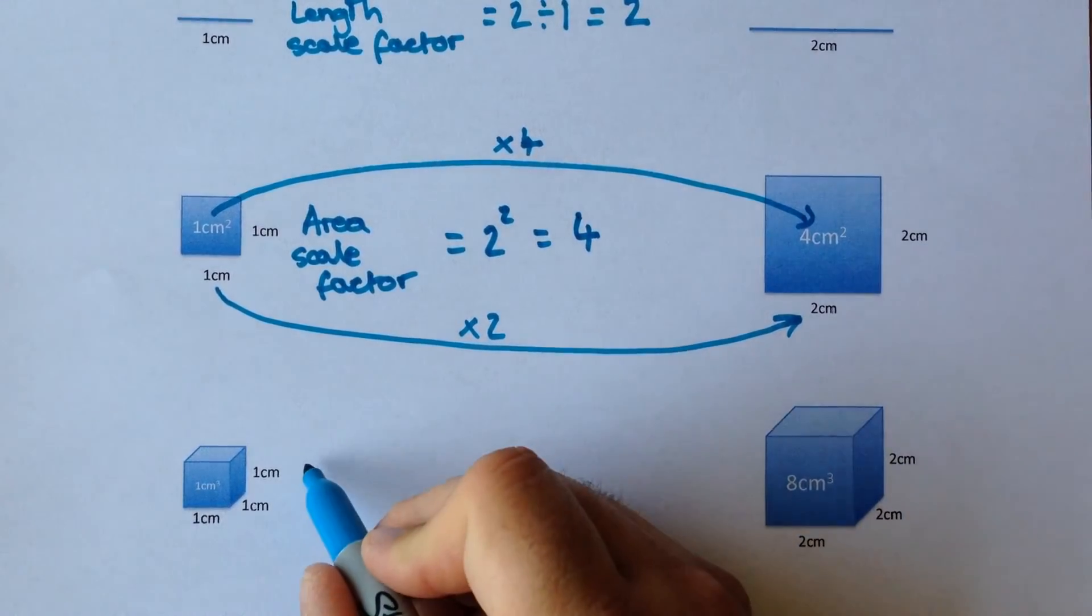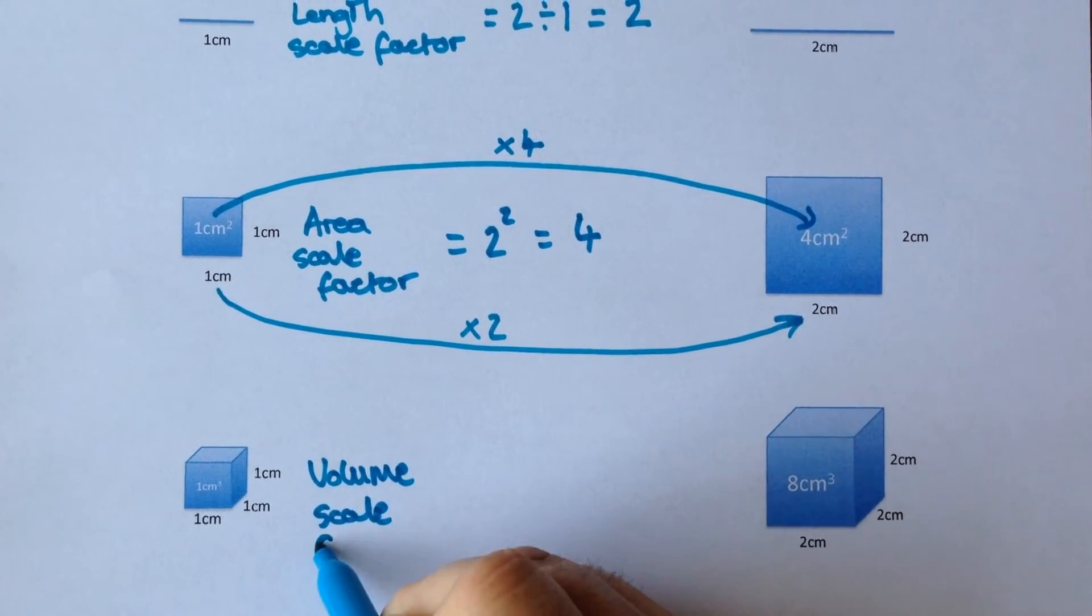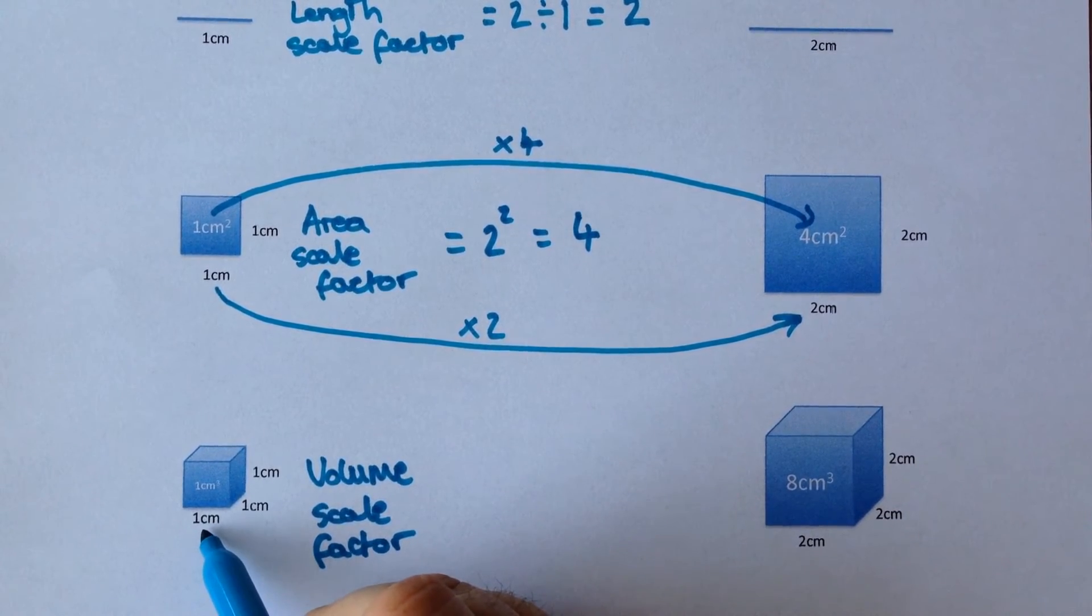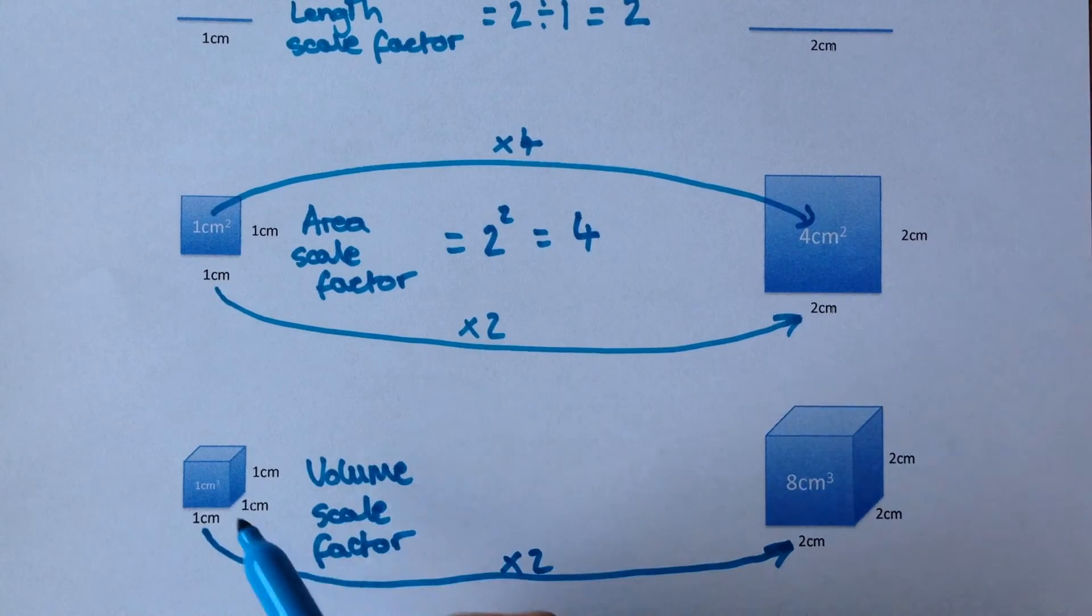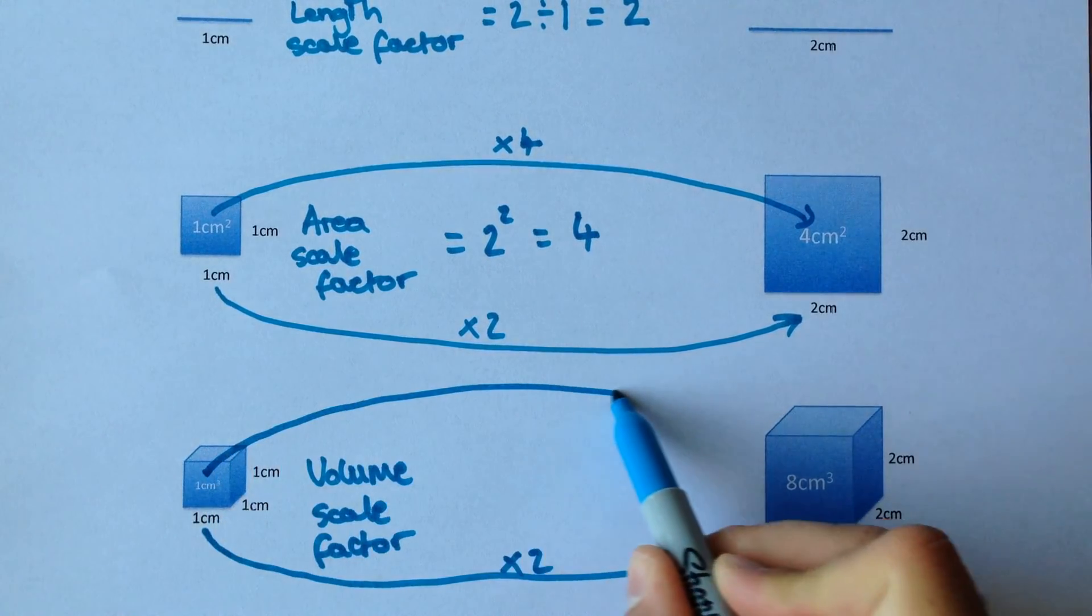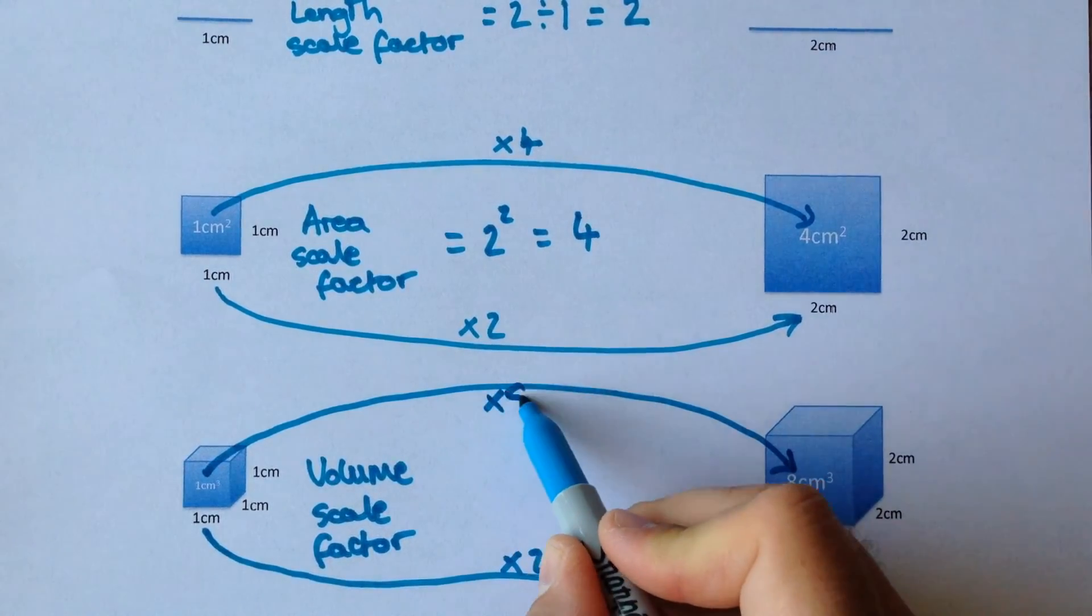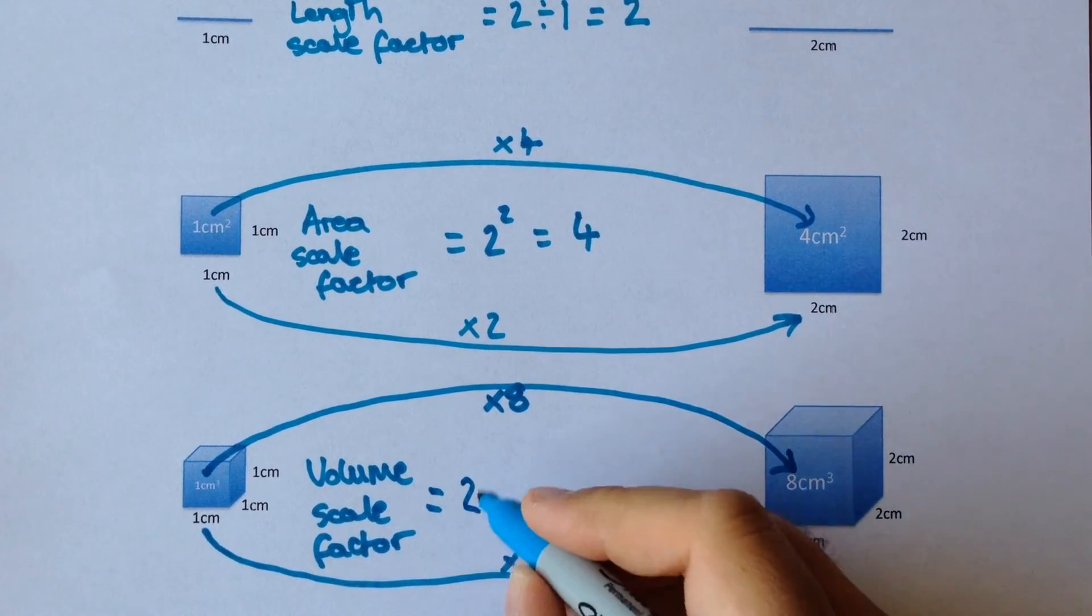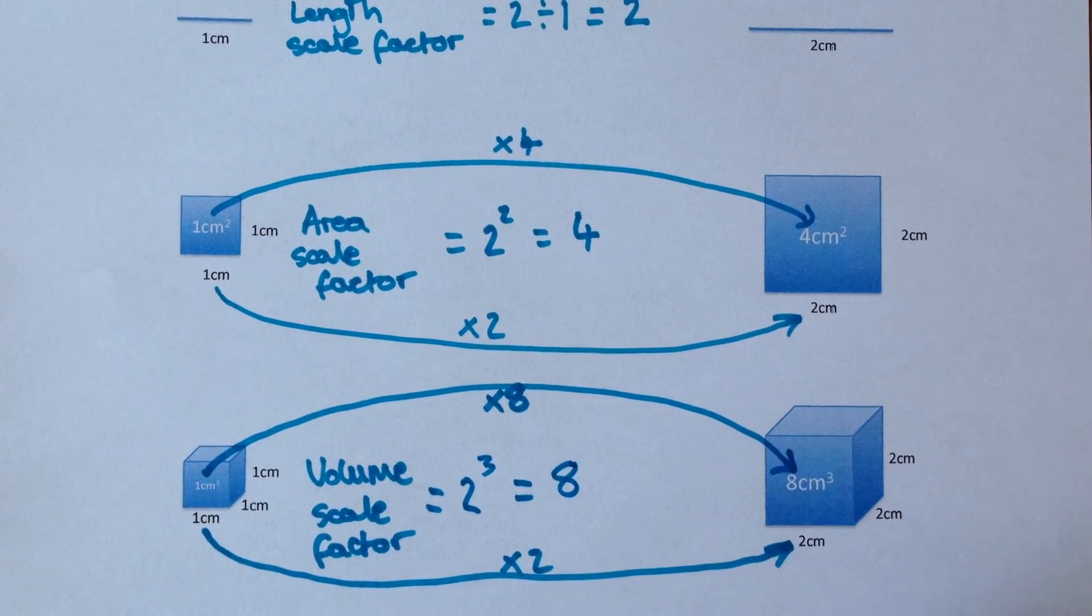Now, the last type of scale factor is volume scale factor. And in this example, again, the length's gone from 1 to 2, so the length scale factor is 2. But you'll notice the volume's gone from 1cm cubed to 8cm cubed, so that's a scale factor of 8. And that came about by taking the length scale factor of 2, cubing it because we're talking about volume, 2 cubed is 8.